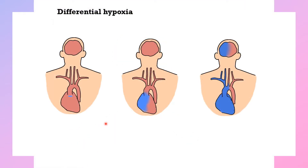Here is another demonstration of Harlequin syndrome, or South syndrome, where the ejecting heart starts to eject more blood. The deoxygenated blood will go to the brain — so the upper part of the body becomes deoxygenated while the lower part has oxygenated blood. The brain will not have enough oxygen in this case.